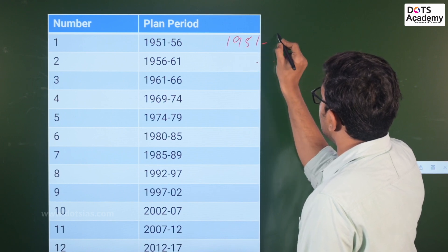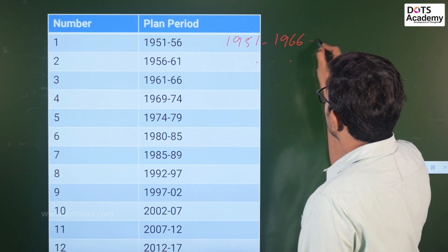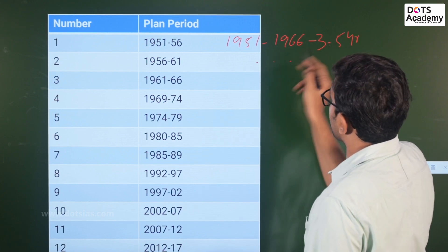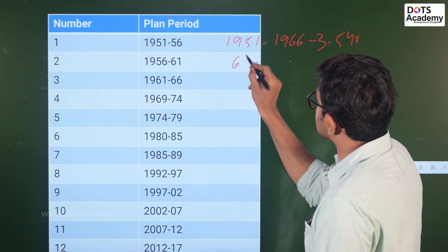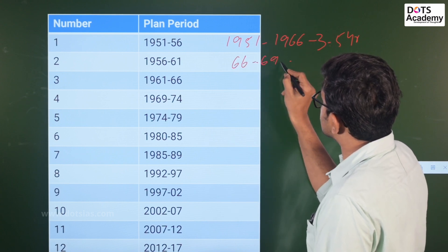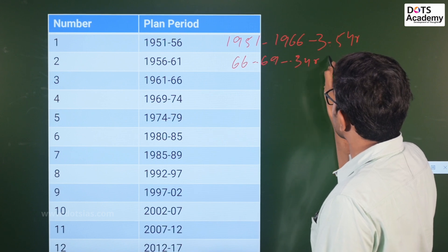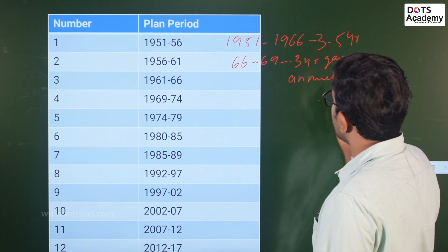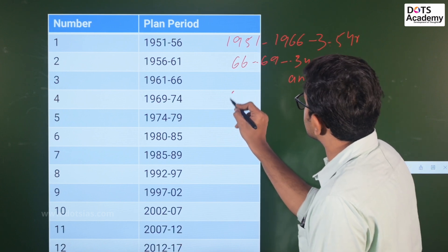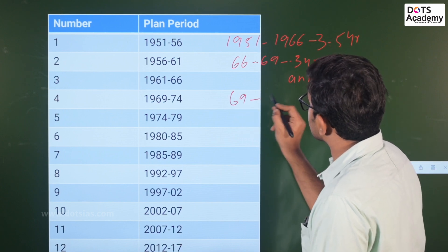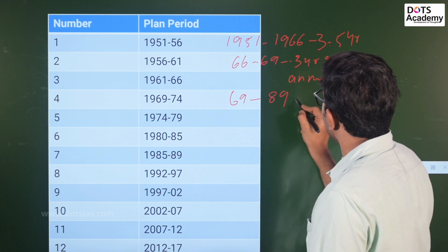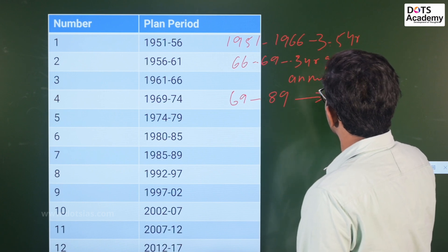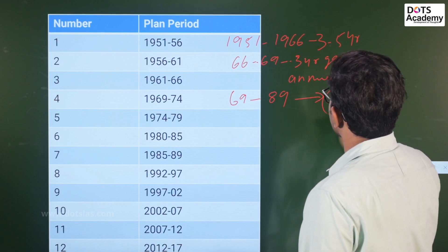In 1951 to 1966, there are three five-year plans. Then annual plans were introduced after 1966 to 1969. We had a five-year plan year starting from 1969.